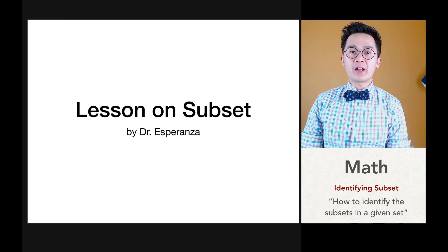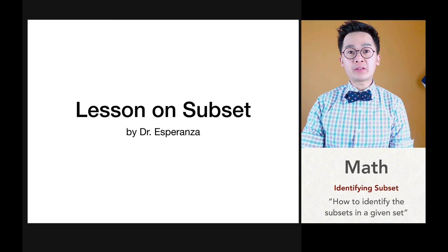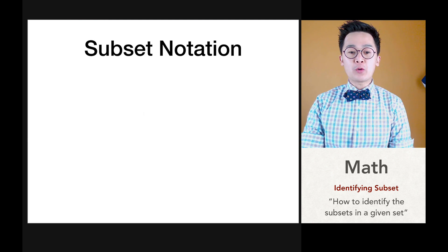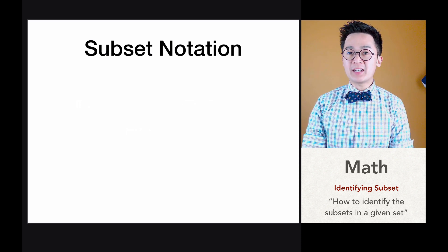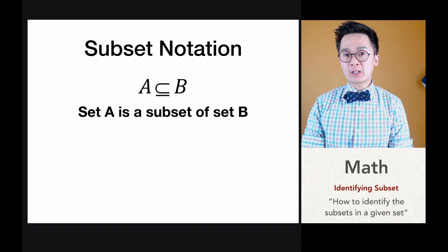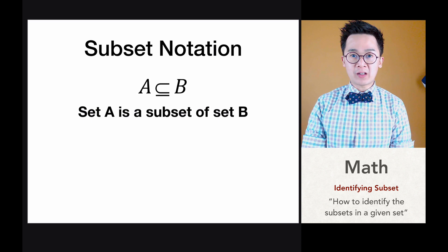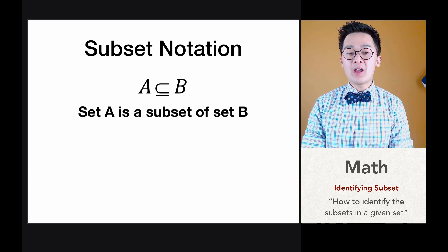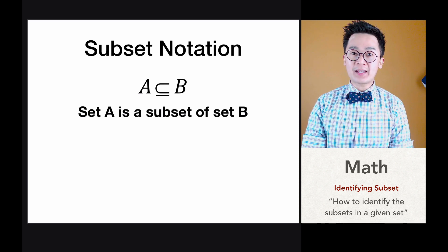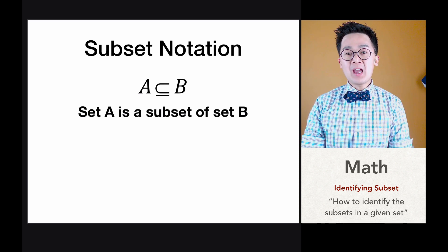Today we're going to be working on how to write notations on subsets. We have subset notation and we're going to be using different symbols to denote a subset in a given set. This is the symbol we're going to be using for a subset. In this particular notation, we will be reading this as A is a subset of B, or set A is a subset of B.